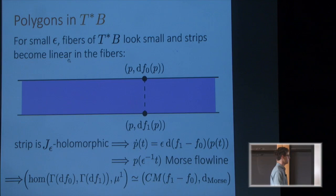And then you use the fact that this strip has to be J_epsilon holomorphic. And that tells you that the projection down to the base, which I'm calling p, satisfies this differential equation here. And after reparameterizing, that's just saying that it's a Morse flow line of the difference of the two functions. So the point is that the unary operation in the Fukaya category, which is just a differential on this HOM set, can be identified with the differential of the Morse complex. So that tells you, in particular, that the homology of that complex is just the singular homology of the base.